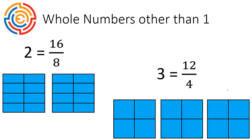Now there are whole numbers other than one. This should not be a surprise to anybody. This is an example of the whole number two. It would be 16 pieces out of eight. So an eight out of eight and another eight out of eight, a full filled in shape. And we've got three, which would be in the case of my example here, 12 out of four.